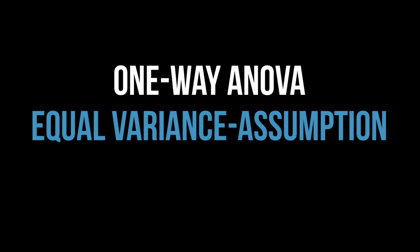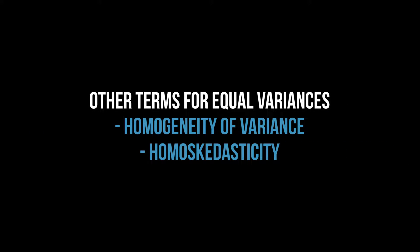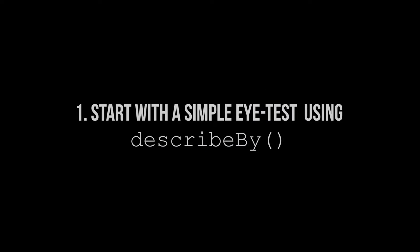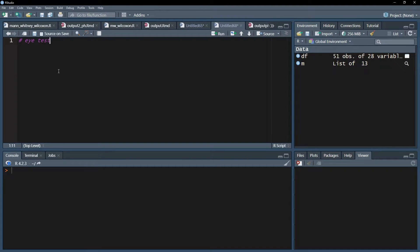This video shows how to test the assumption of equal variances as a requirement for the one-way ANOVA in R. For testing the assumption of homogeneity of variances, an initial test can be simply looking at the variance of the test variable for each group. For that purpose, you can use the DescribeBy function of the Psyc package.